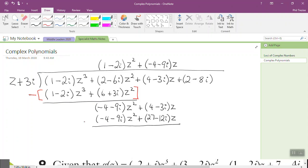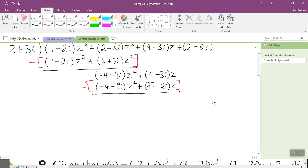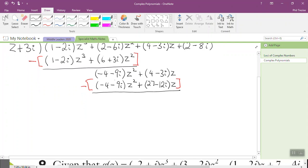And once again, we subtract all of that. The first part, the first term here in z-squared is the same. 4 take 27 is negative 23. Negative 3 take negative 12, take negative is add 12, 12 take 3 is positive 9i, and this is z.